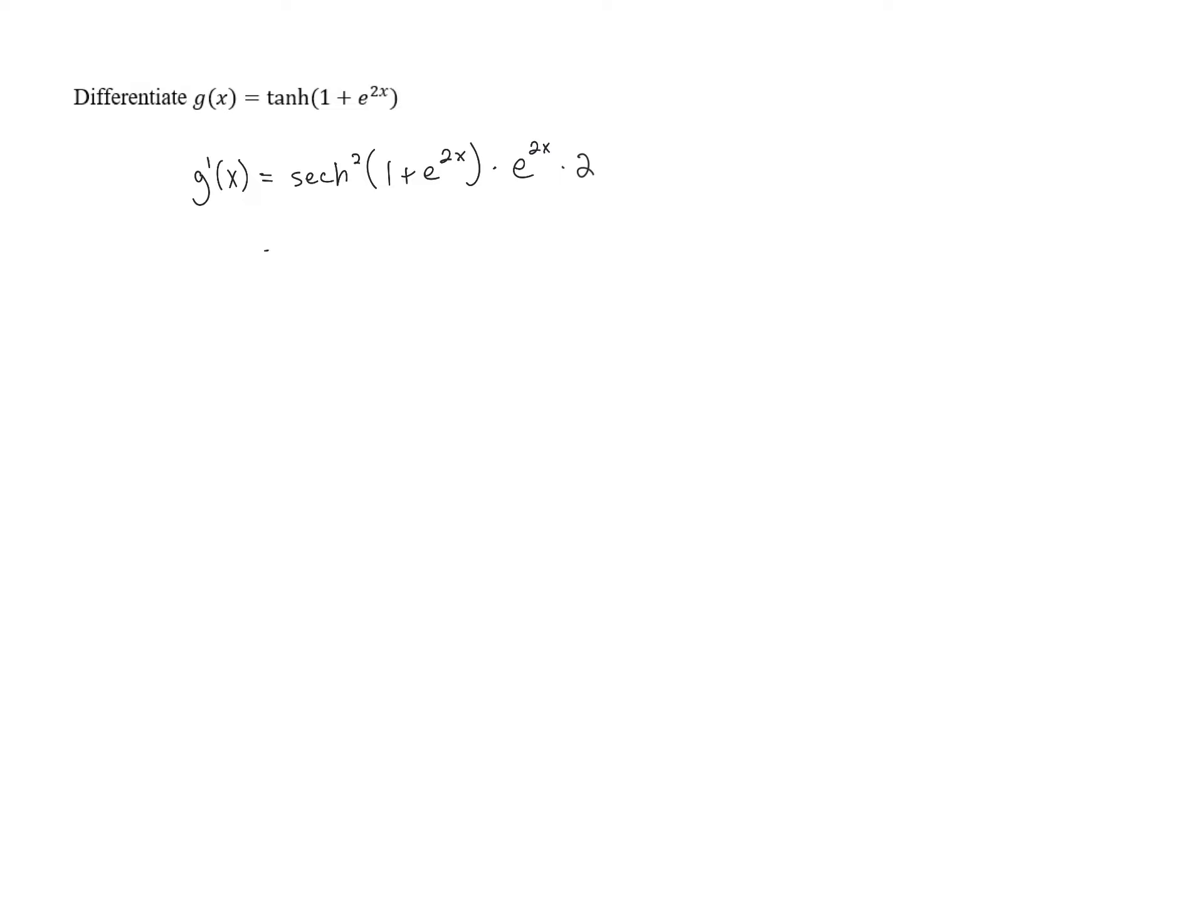And so let's put that coefficient, and maybe even the e to the 2x out front. This is 2e to the 2x times hyperbolic secant squared of the quantity 1 plus e to the 2x. There we go.